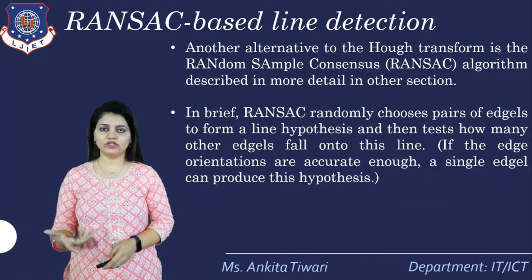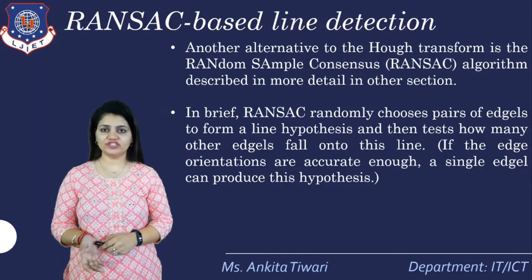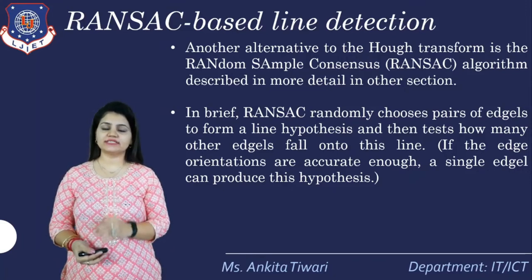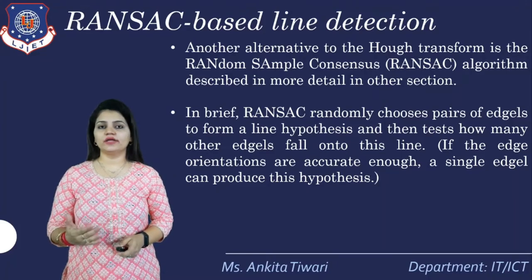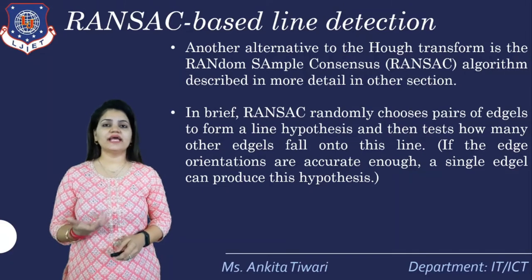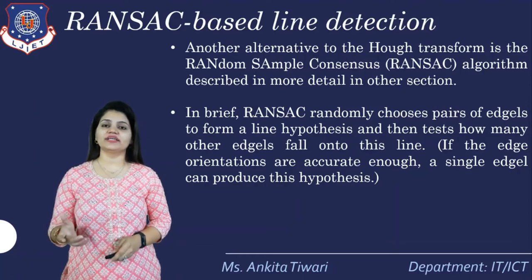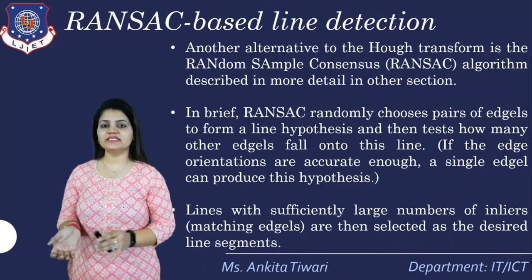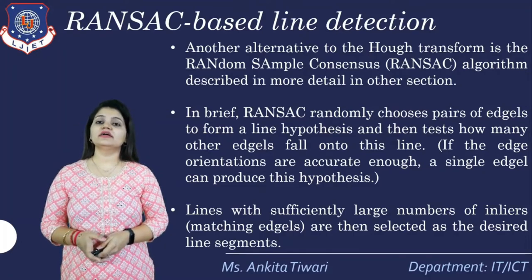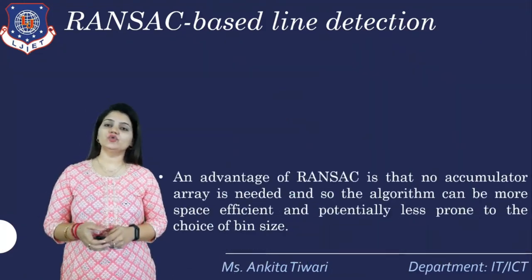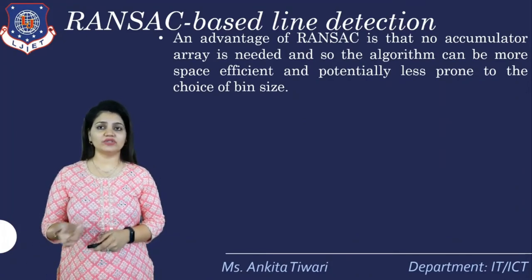In brief, RANSAC randomly chooses pairs of edges to form a line hypothesis. Whenever the word hypothesis comes, it arises with respect to the assumptions we are making in order to test how many other edges will fall on the line we are considering. If the edge orientations are accurate enough, a single edge can produce this hypothesis. Lines with sufficiently large numbers of inliers — that is, matching edges — are then selected as the desired line segment.